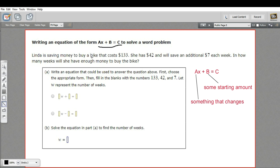It says, Linda is saving money to buy a bike that costs $133. She has $42, so that's what she's starting with, and will save an additional $7 each week.